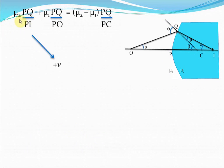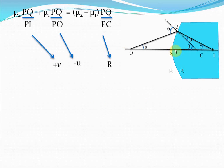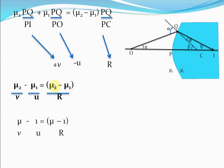We've substituted the values. PI is clearly plus V, the image distance, since I is where the image is formed and P is the center of the spherical surface. PO is the object distance minus U, and PC is the radius of curvature. If we substitute these values, we get mu2/V minus mu1/U equals (mu2 minus mu1)/R.